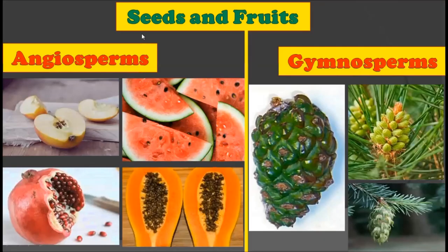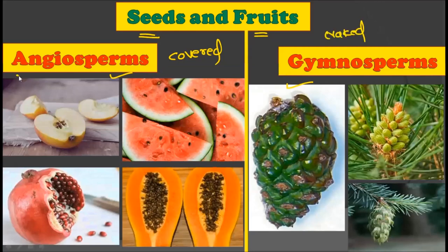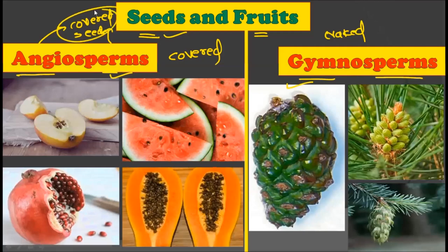The very first point we are going to consider here is seeds and fruits. This is the biggest difference between angiosperms and gymnosperms — angiosperms have the covered seed enclosed in fruits, while gymnosperms have the naked seed. The words angiosperm and gymnosperm are also derived from the nature of the seed: angio means covered and sperma means seed, so angiosperm literally means covered seed.